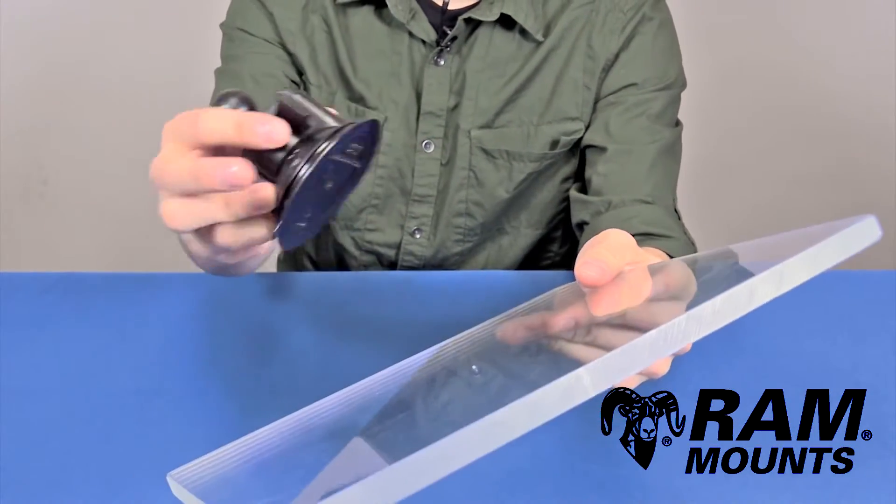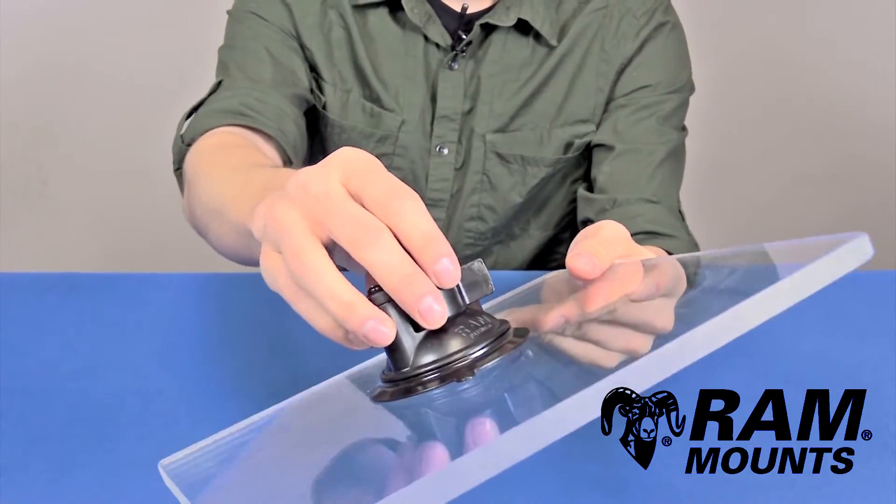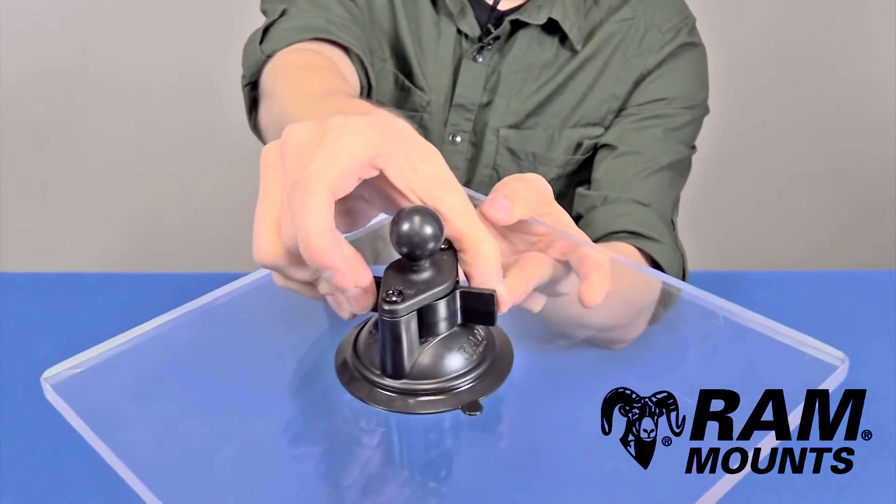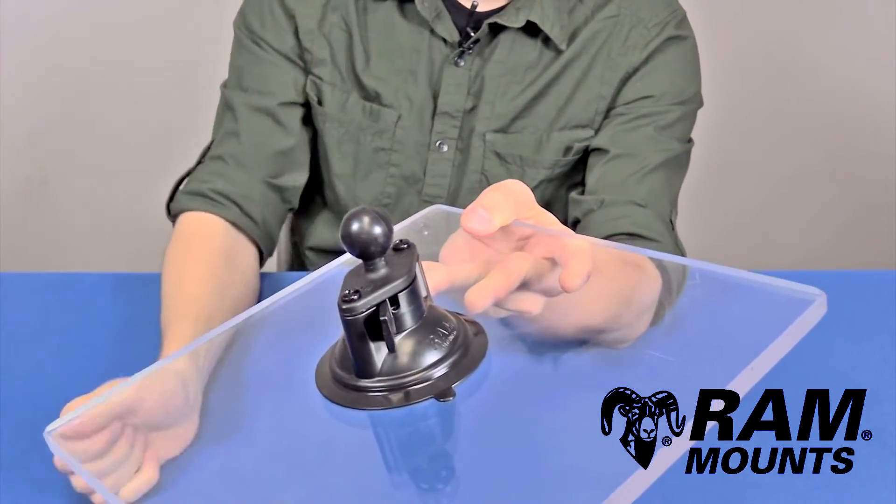As you can see here, if you place this on any clean, glass, non-porous surface, you simply twist on the latch of the suction cup, and you've activated your suction.